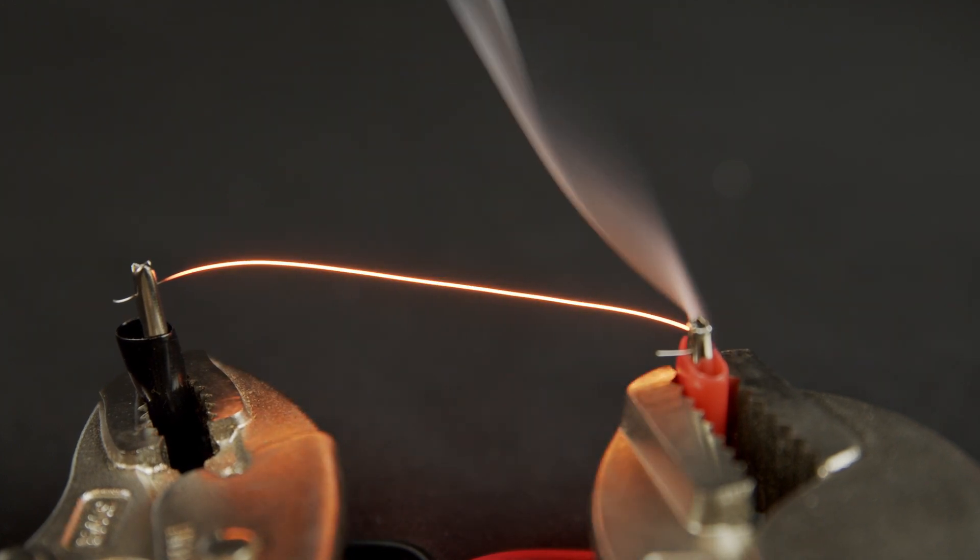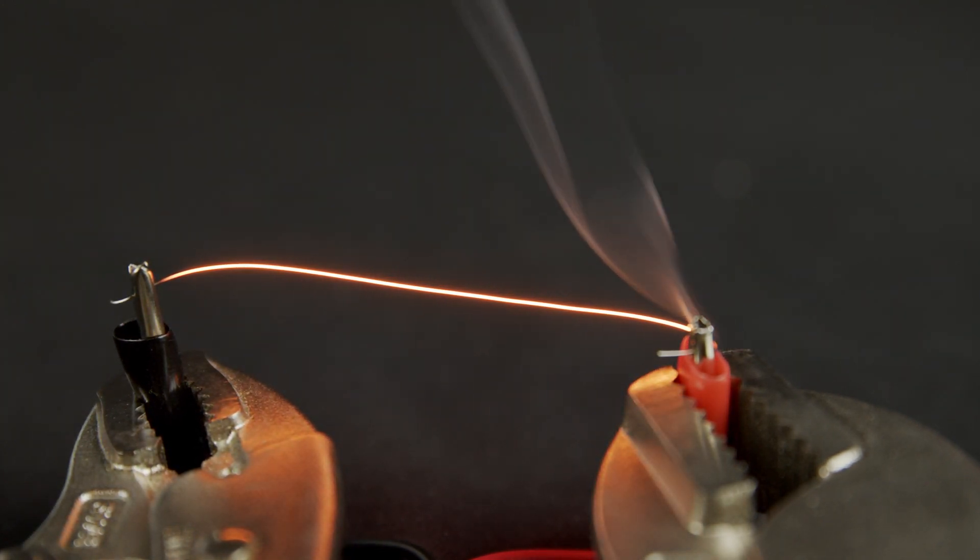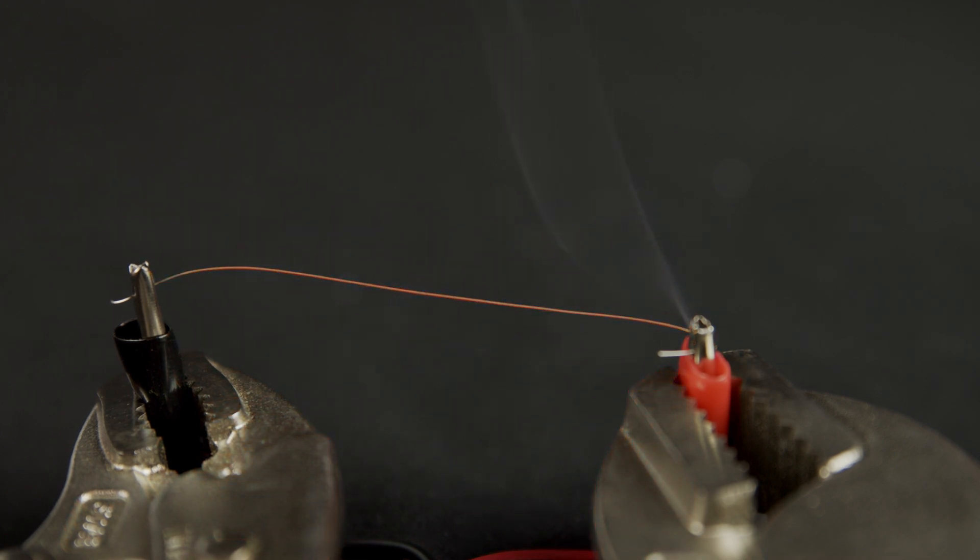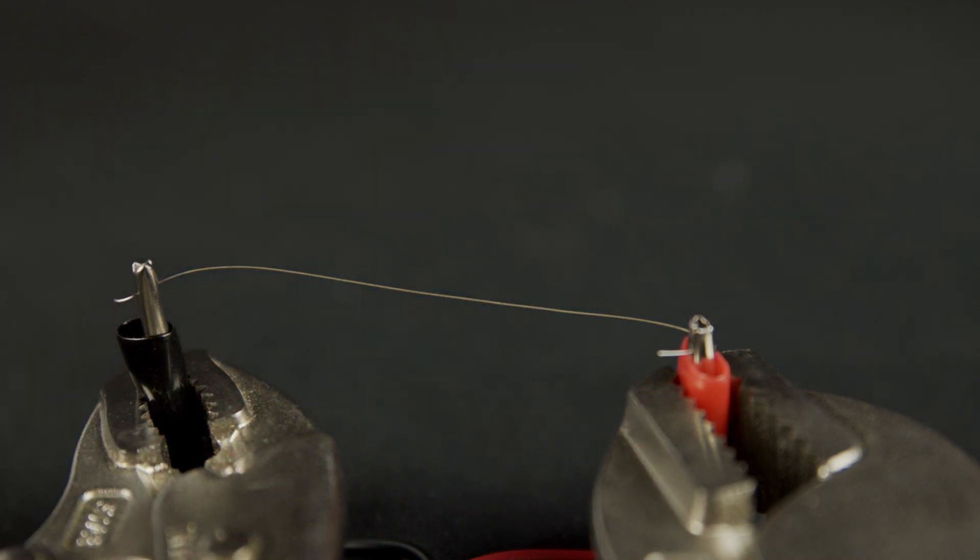For heating in air, a material called nichrome is often used. Nichrome is an alloy of nickel and chromium. It is electrically resistive and not easily oxidized at high temperatures.